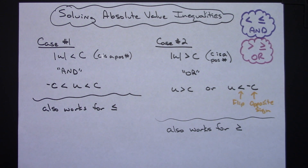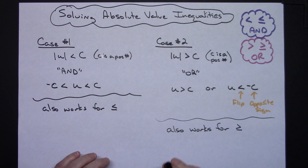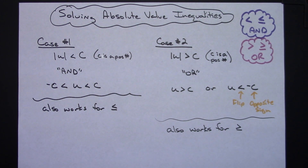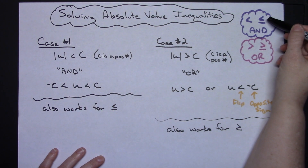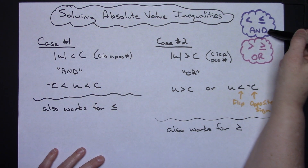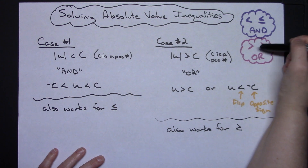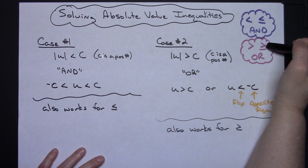In this video we're going to take a look at solving some absolute value inequalities. I am going to assume that you have worked with regular inequalities prior to this and that you have associated less than and less than or equal to with AND, and greater than or greater than or equal to with OR.